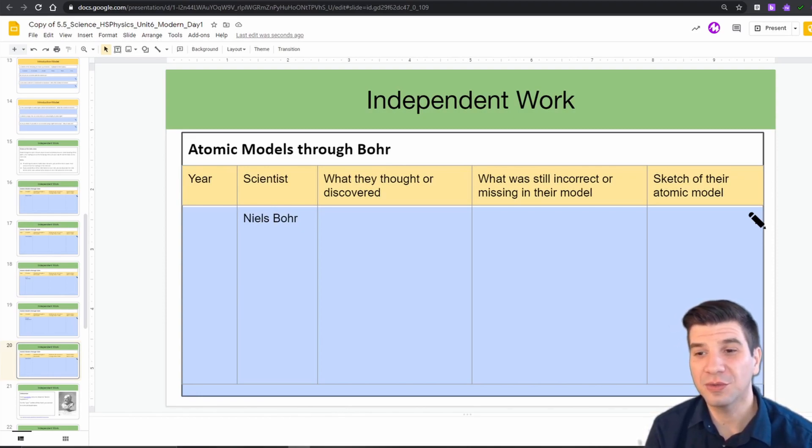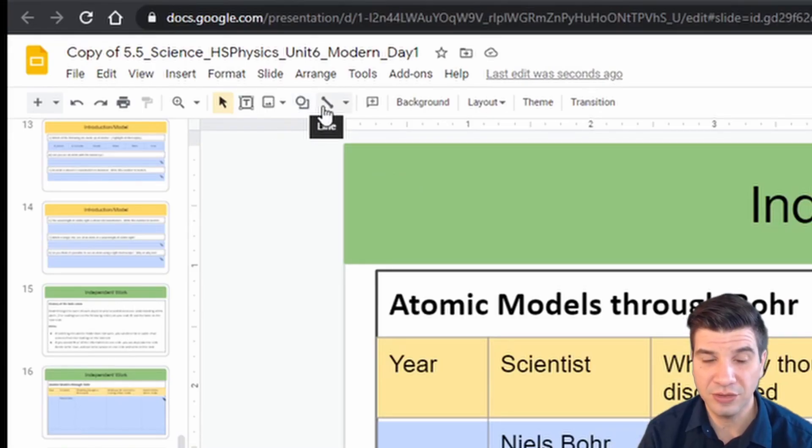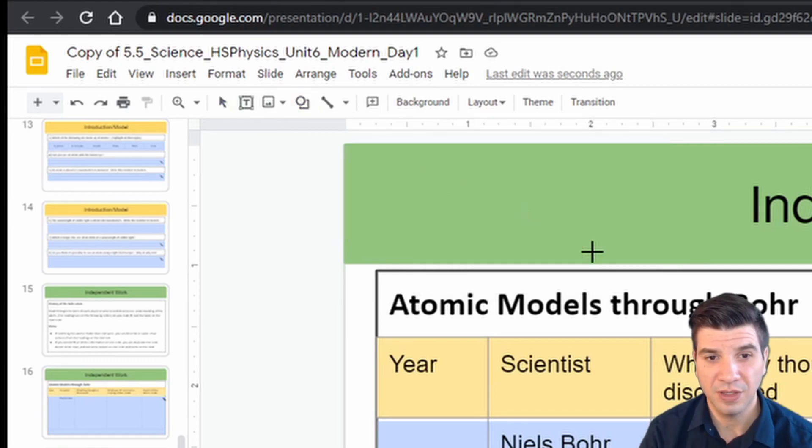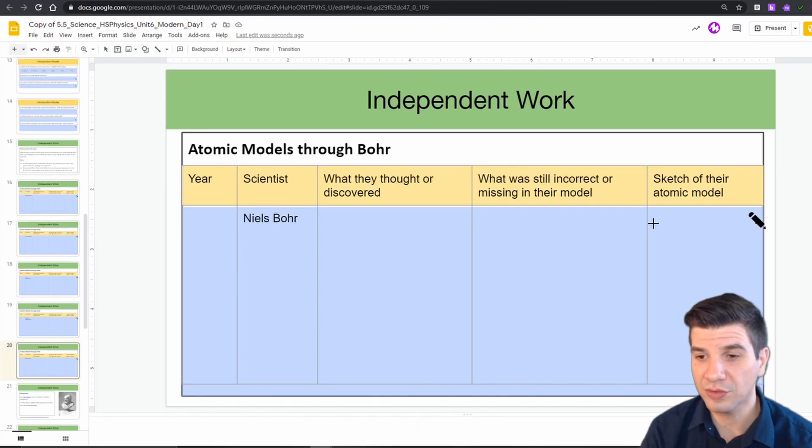While I have you here, there's one other thing I do want to show you. I want to show you how to sketch out some of these atomic models. You do have some tools up here. You have your shape tool and your line tool. For the shape tool, you may want to use a circle. Now you can use this for drawing orbitals or drawing protons, neutrons, electrons.